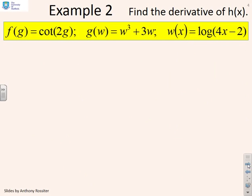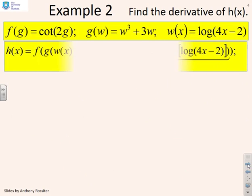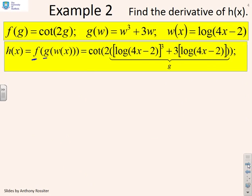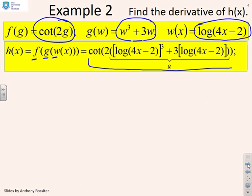Example 2. Find the derivative of h of x where h is defined as a function of g, and g is a function of w, and w is a function of x. The function f is cot 2g, the function g is w cubed plus 3w, and the function w is log 4x minus 2. If you were to look at the original function here, you're probably saying, yuck, that really does not look very nice. But if you break it down to what's f, what's g and what's w, you'll find it's actually relatively straightforward.